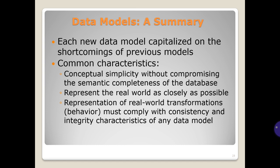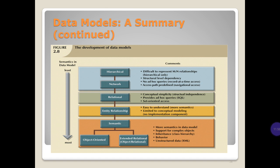Data models summary: each new data model capitalized on the shortcomings of previous models. Common characteristics include conceptual simplicity without compromising semantic completeness, representing the real world as closely as possible, representation of real-world transformations, and behavior must comply with consistency and integrity constraints. The evolution spans: hierarchical, network, relational, entity-relationship, semantic, object-oriented, extended relational, and object-relational models.